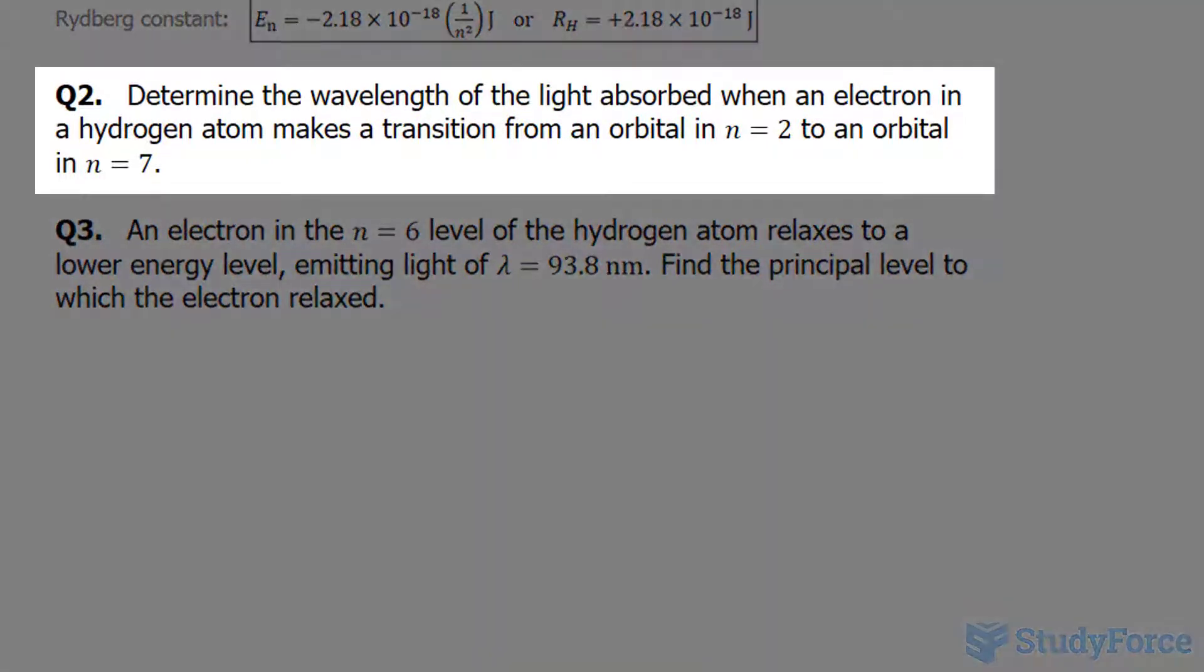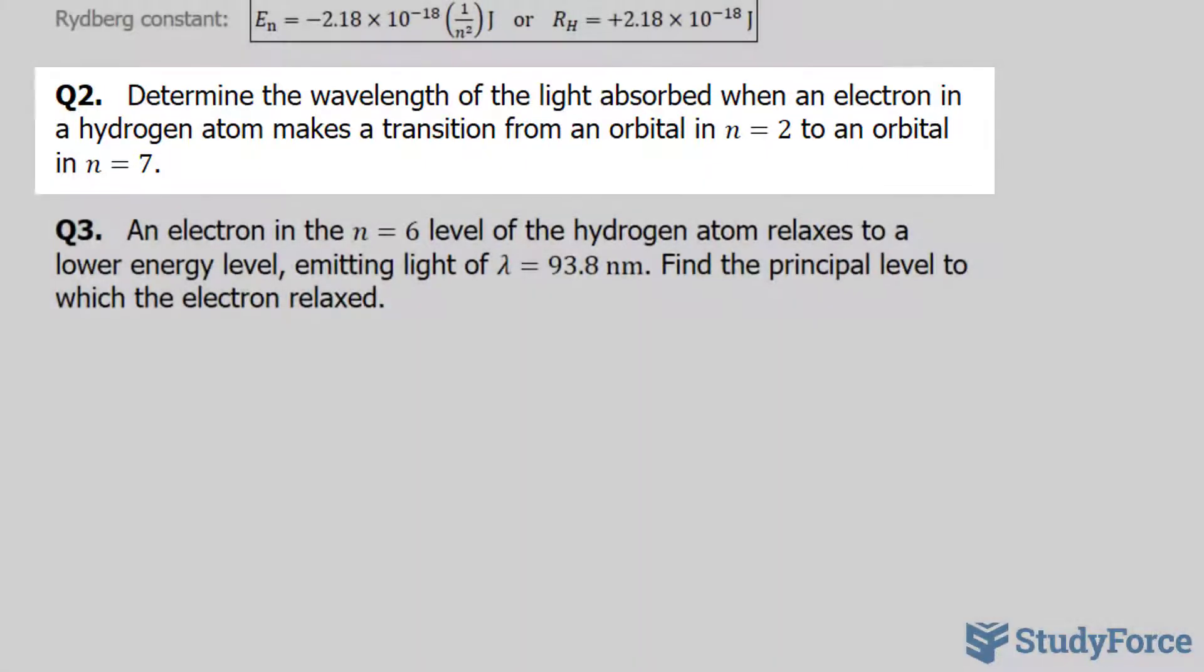Let's start with question 2. The question reads: determine the wavelength of the light absorbed when an electron in a hydrogen atom makes a transition from an orbital n equals 2 to an orbital n equals 7.